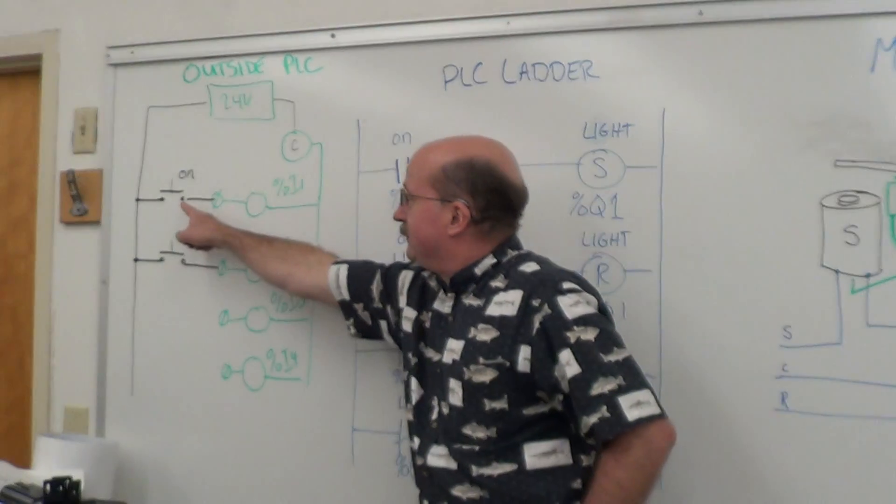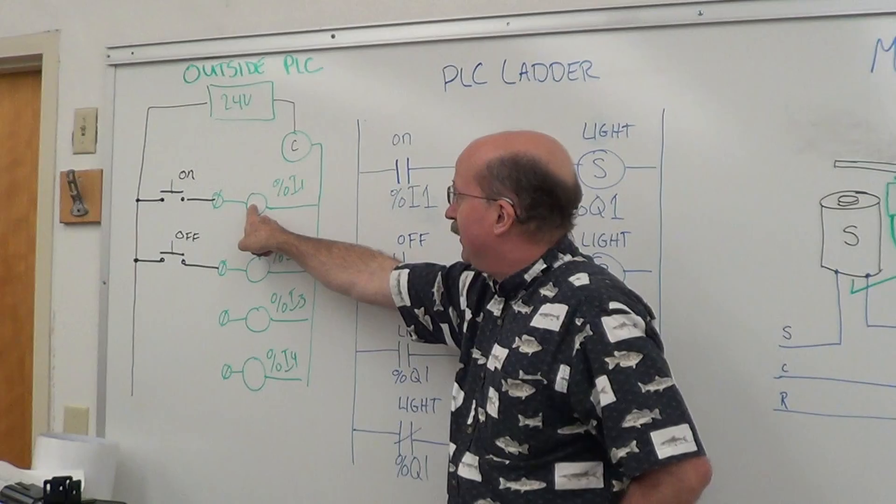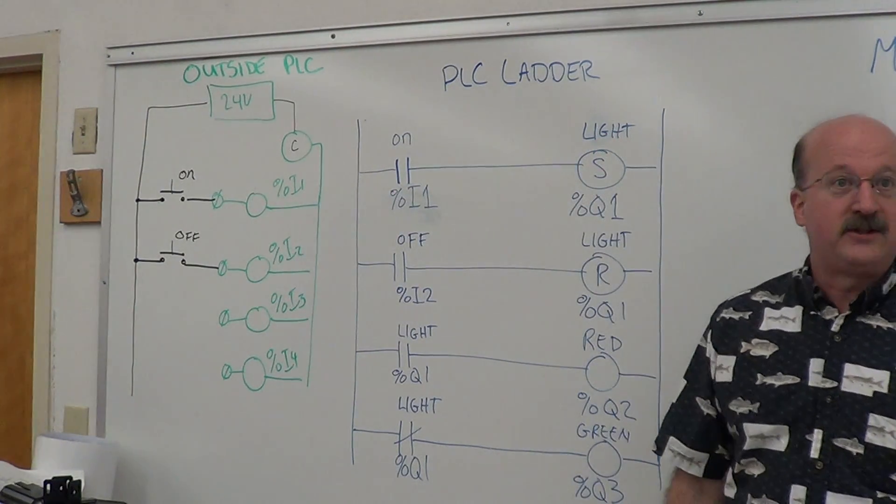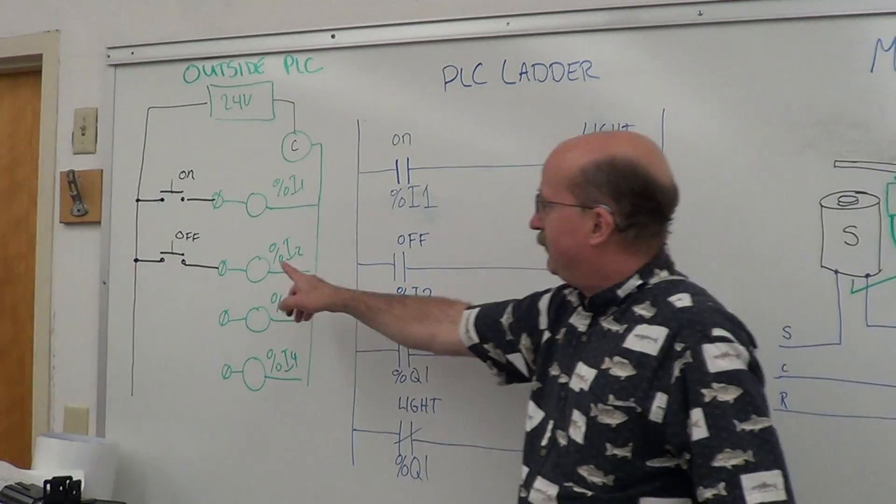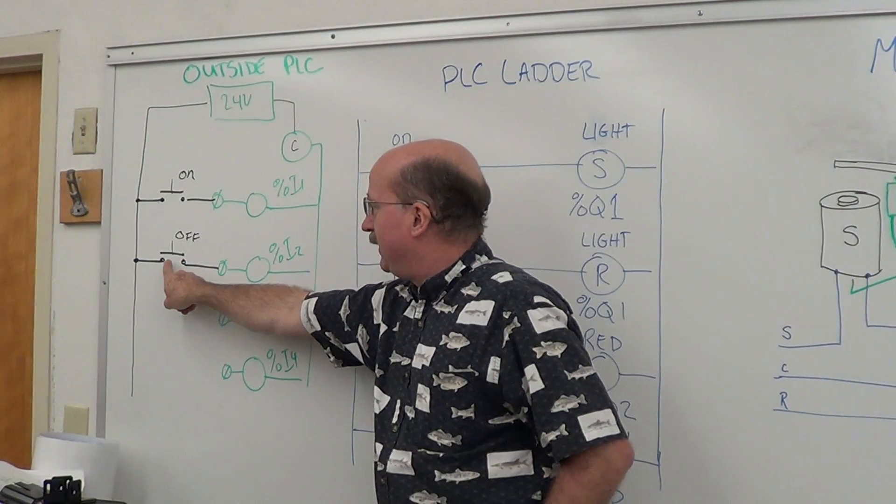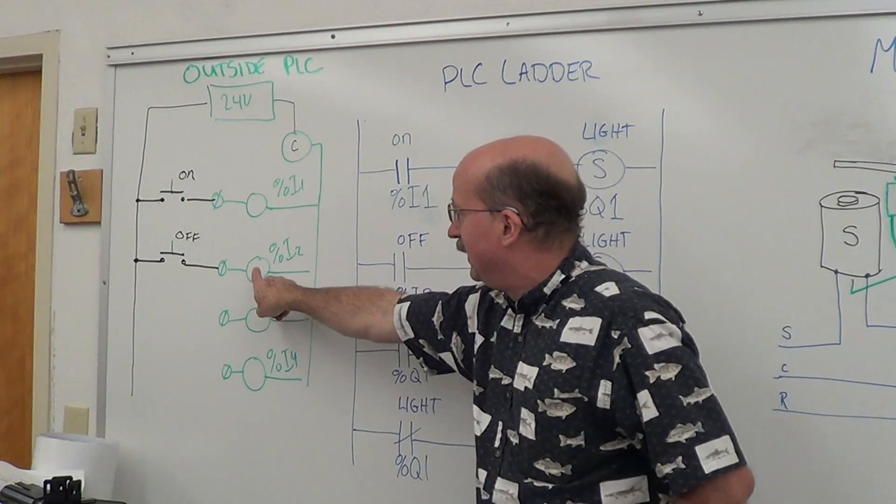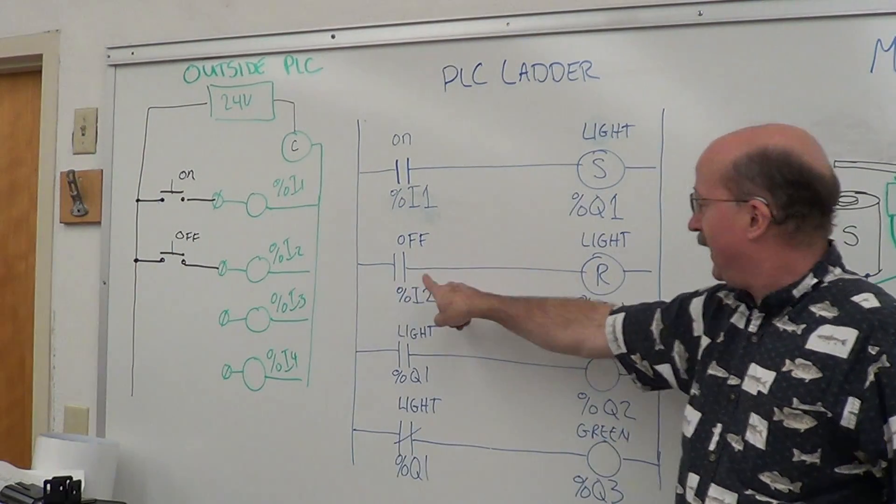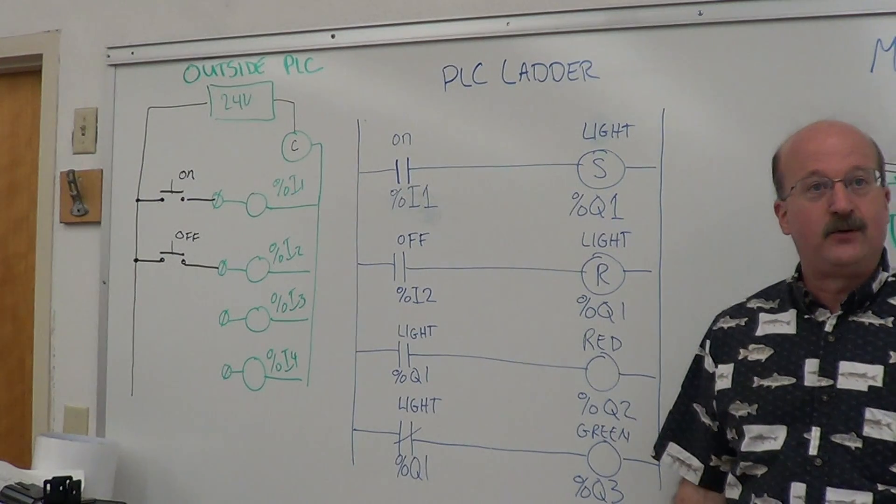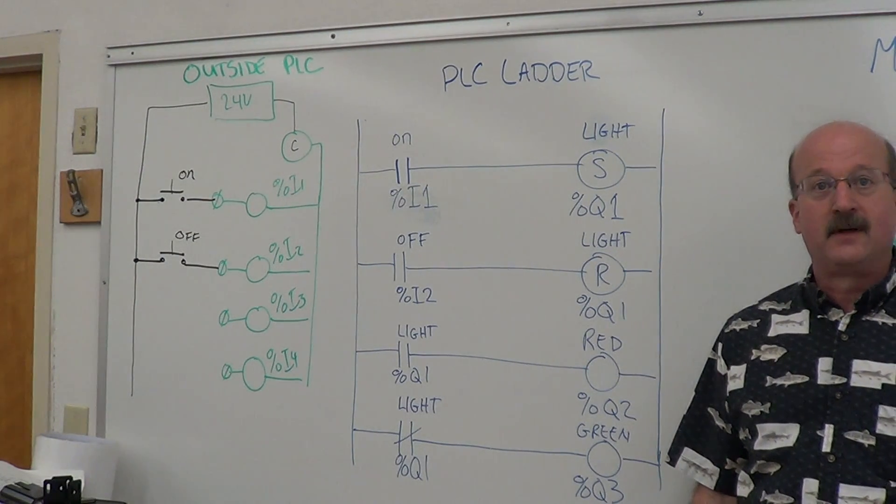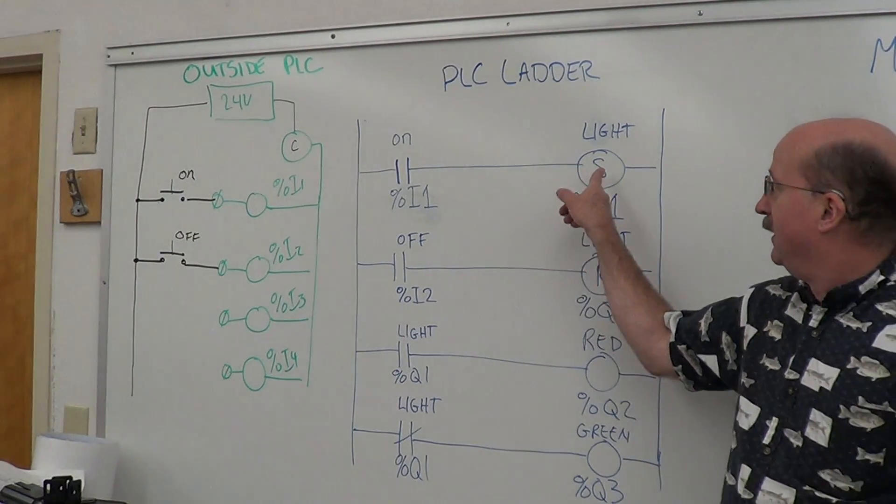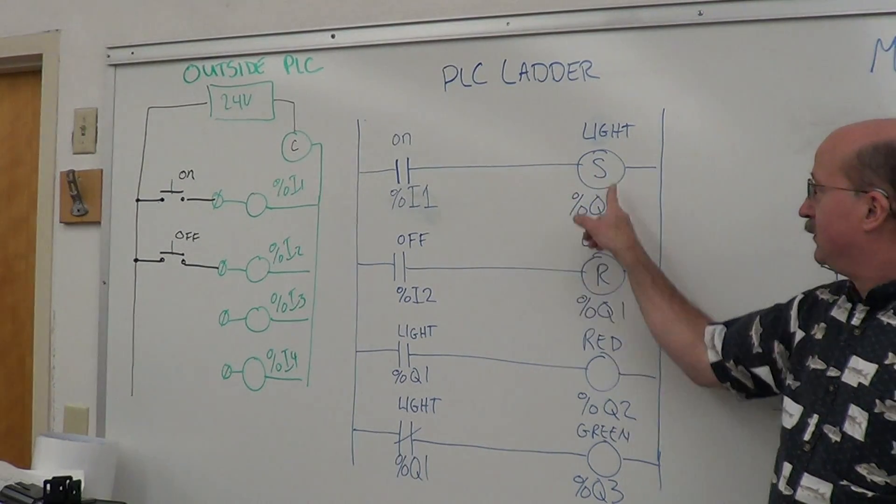If I push the on switch, the on push button, it'll energize this coil, close those contacts, energize your set relay. Same thing on this: if I push the off button, it'll close those contacts, energize your input coil, close these contacts, and put it into a reset mode. Very similar. All you need is a momentary input on here to turn it on or off.